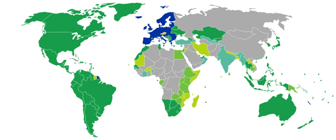Visa requirements for Austrian citizens are administrative entry restrictions by the authorities of other states placed on citizens of Austria. In 2017, Austrian citizens had visa-free or visa-on-arrival access to 173 countries and territories, ranking the Austrian passport fourth in terms of travel freedom, tied with Belgian, British, Dutch, French, Luxembourgish, Norwegian, and Singaporean passports. According to the Henley Visa Restrictions Index, the Austrian nationality is ranked 10th in the Nationality Index, which differs from the Visa Restrictions Index by also considering internal factors such as peace and stability, economic strength, and human development, in addition to travel freedom.